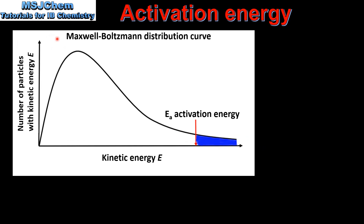Here we have a Maxwell-Boltzmann distribution curve. This shows the distribution of kinetic energy among the particles in a sample of gas. On the x-axis we have kinetic energy, and on the y-axis we have number of particles with a certain value of kinetic energy. The area under the curve represents all the particles of gas in the sample.